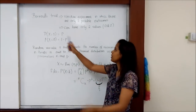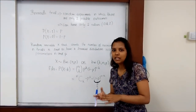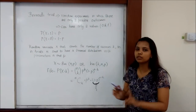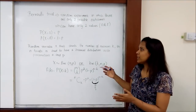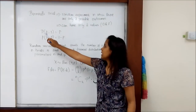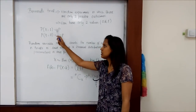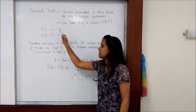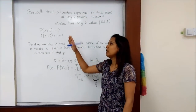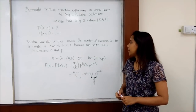First I want to introduce the binomial trial, which is a random experiment in which there are only two possible outcomes. It can either be a success or a failure, meaning either zero or one. It has only two values: zero and one, where one can denote success or failure depending on the situation. The probability that x equals one is p, and the total probability is one, so the other must be one minus p.